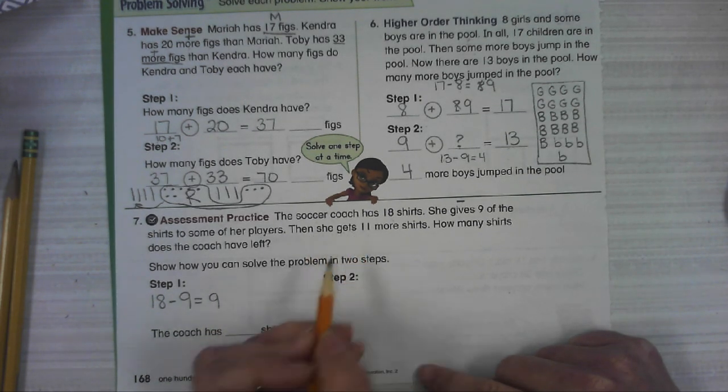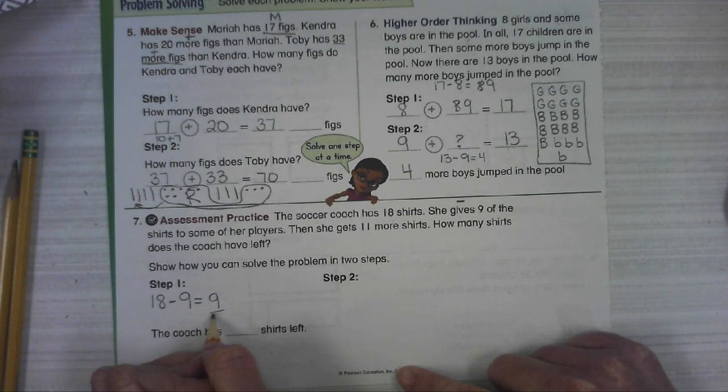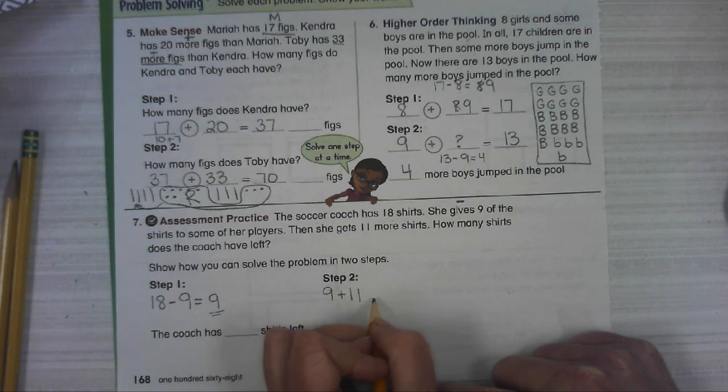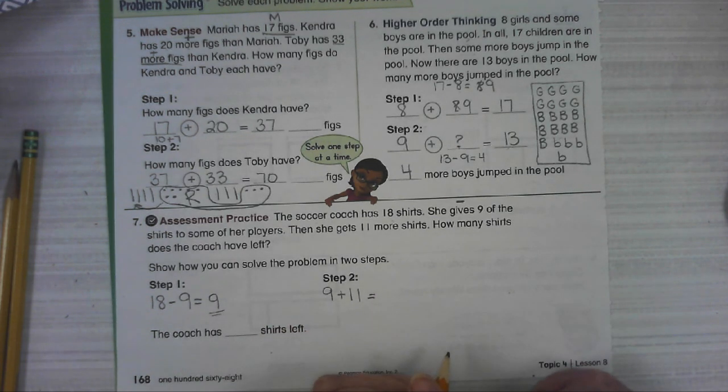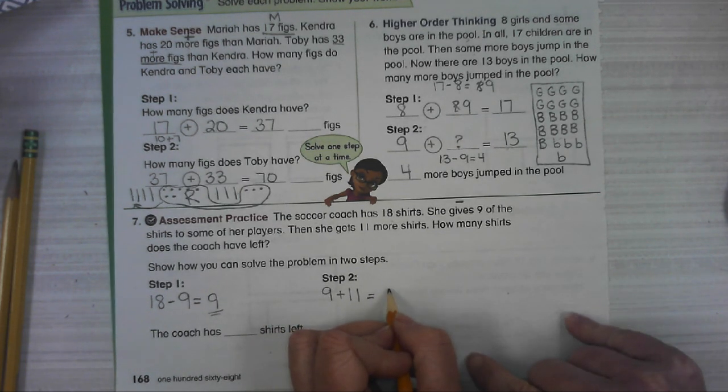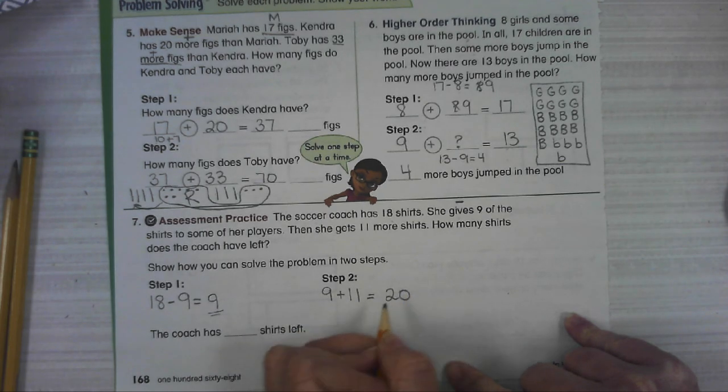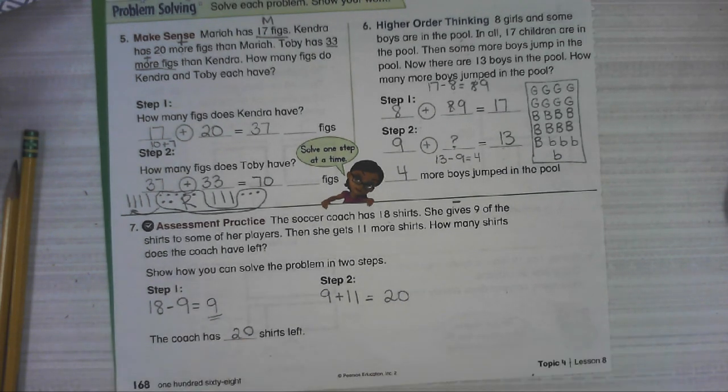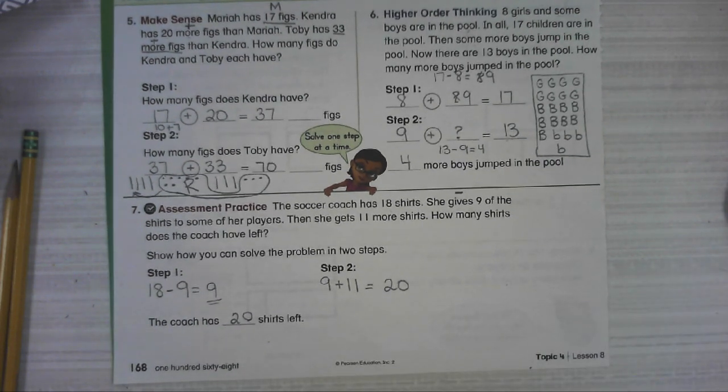Next, she gets 11 more shirts. So we're going to start with this number and she gets 11 more. Now, how many does she have? Nine plus 11 equals 20. So you should have gotten 20 for number seven. The coach has 20 shirts left. All right.